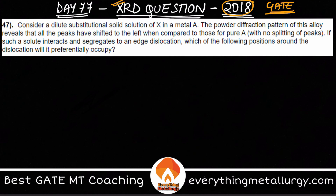Consider a dilute substitutional solid solution of X in A, where X is the solute atom and A is the matrix metal. The powder diffraction pattern of the alloy reveals that all the peaks have shifted to the left. Now, what are these peaks?